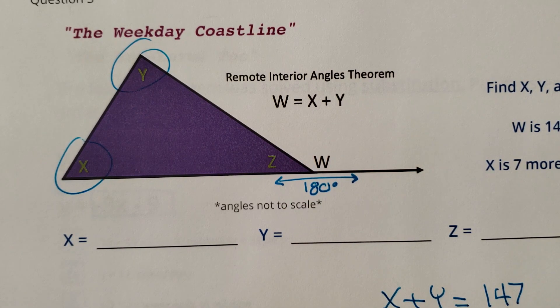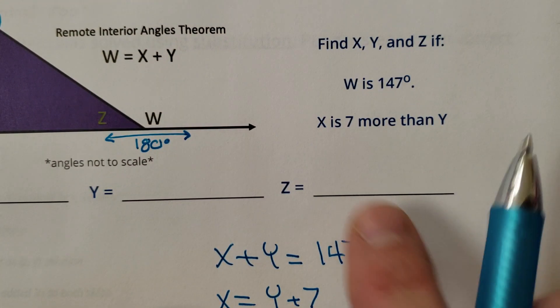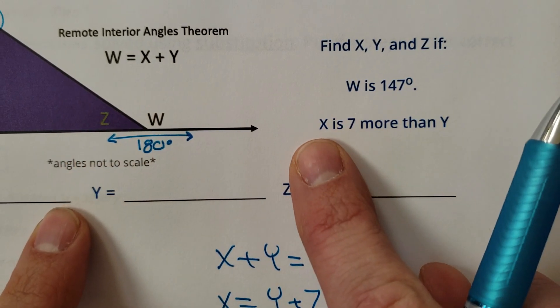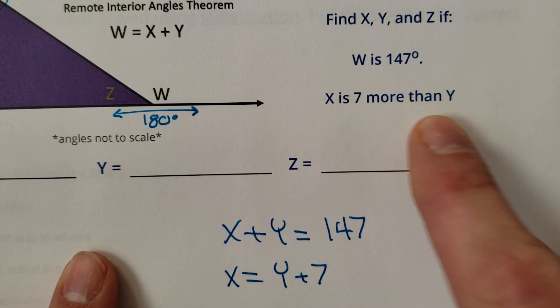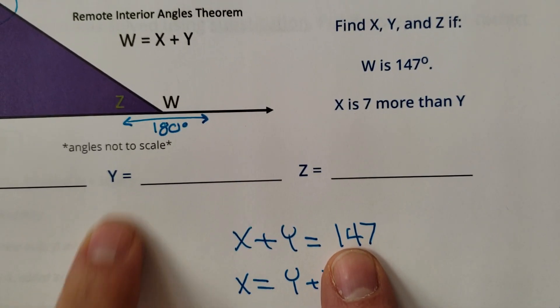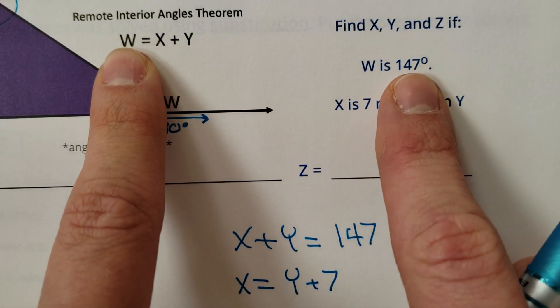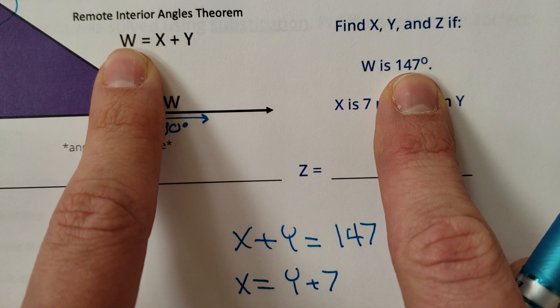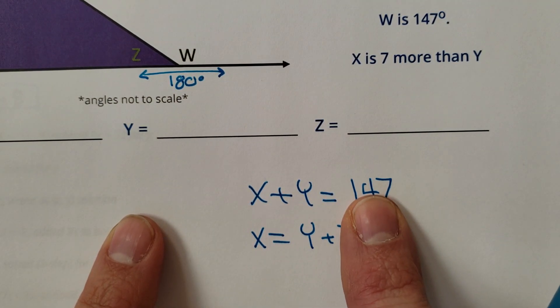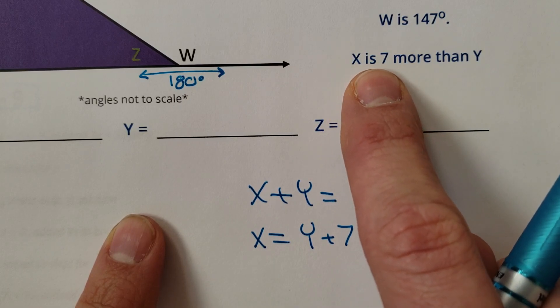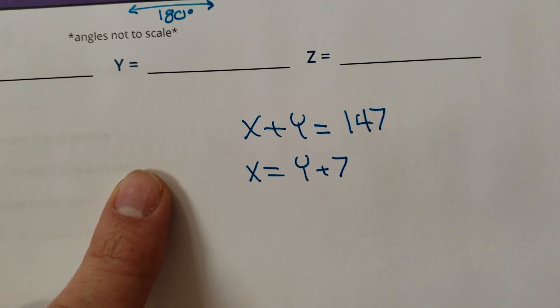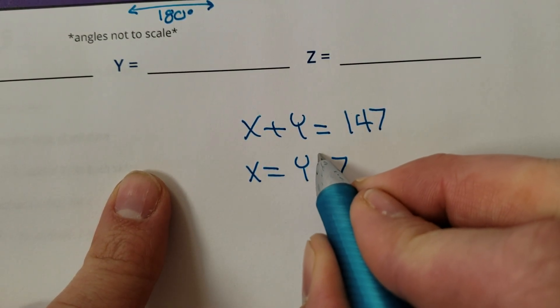So let's do some math. Find the inside angles X, Y, and Z if W is 147 and X is 7 more than Y. I made a system here: X plus Y is 147, it says so right there. X plus Y is W, and W is 147, so I did some substitution. X is 7 more than Y, so X is going to equal Y plus 7.